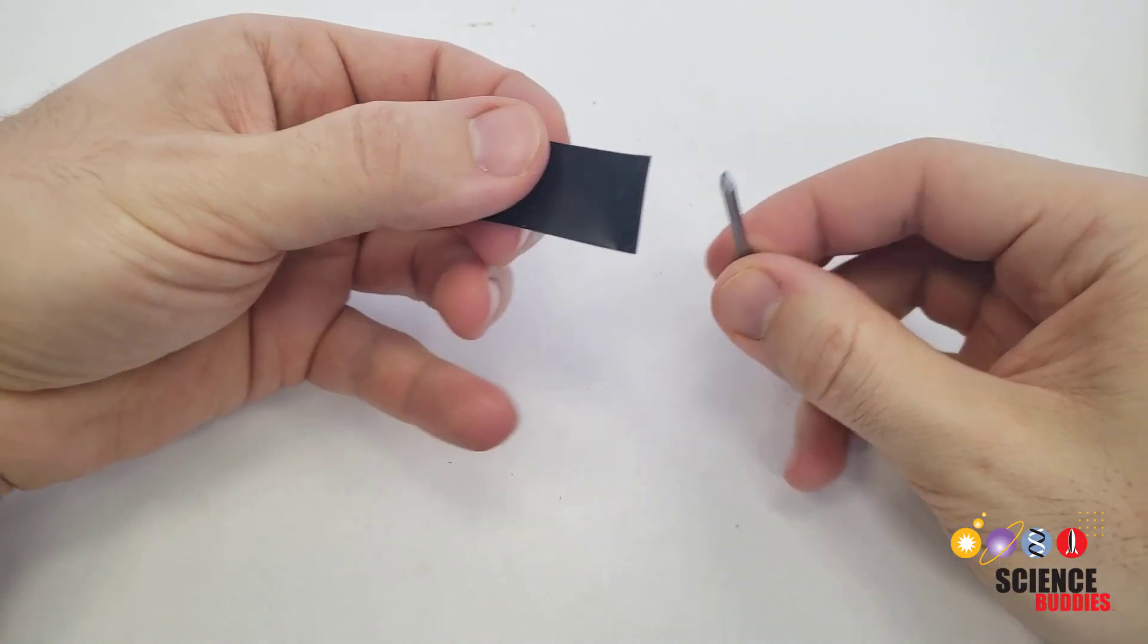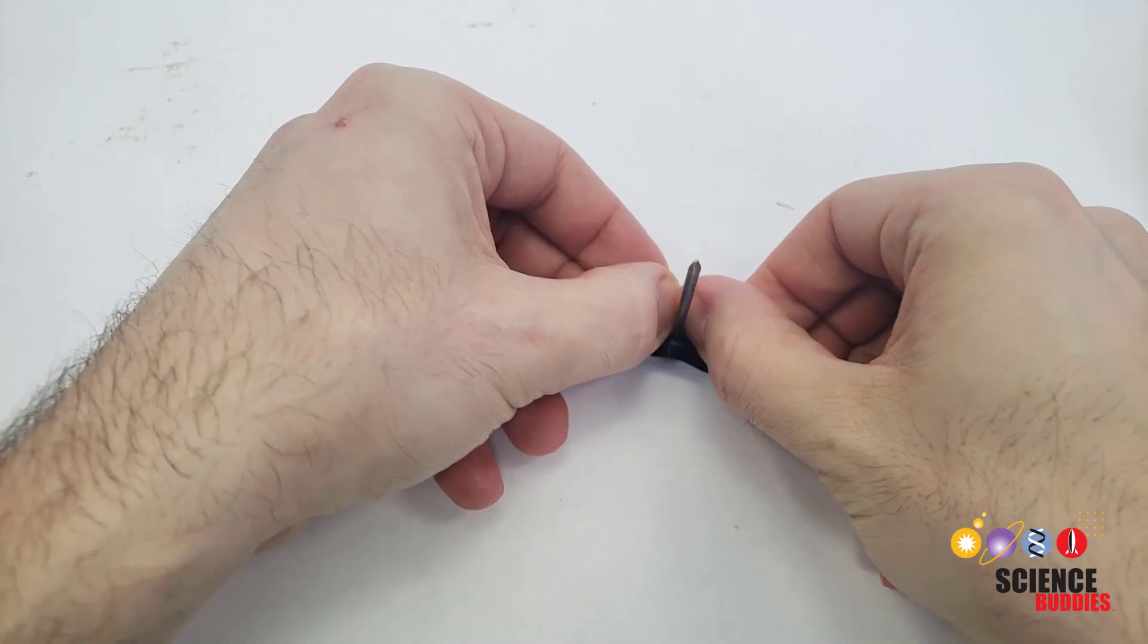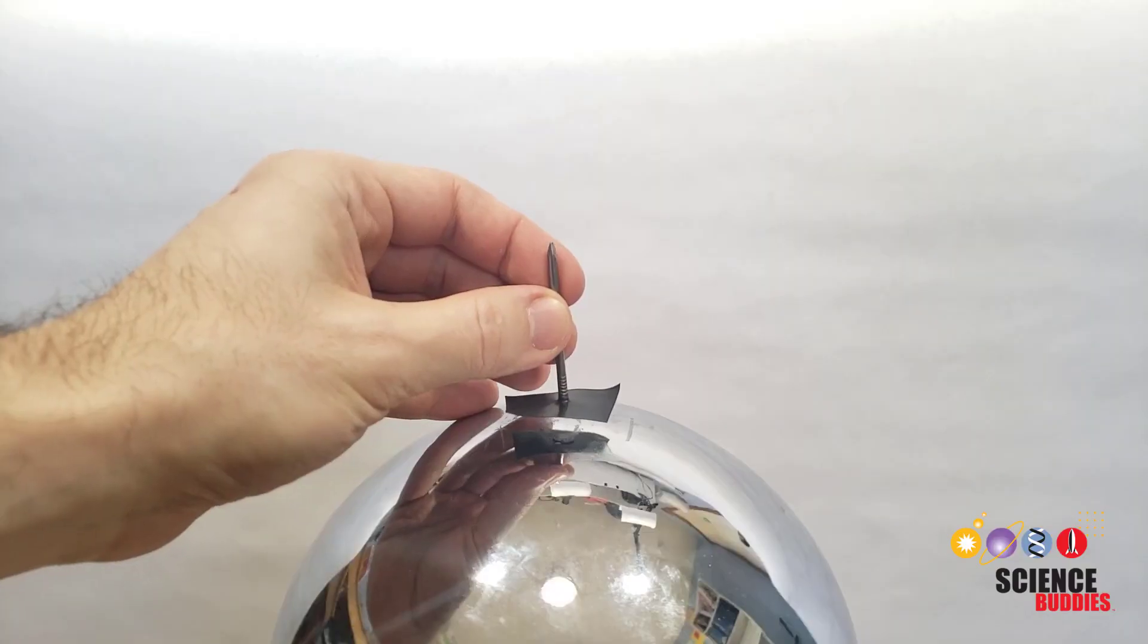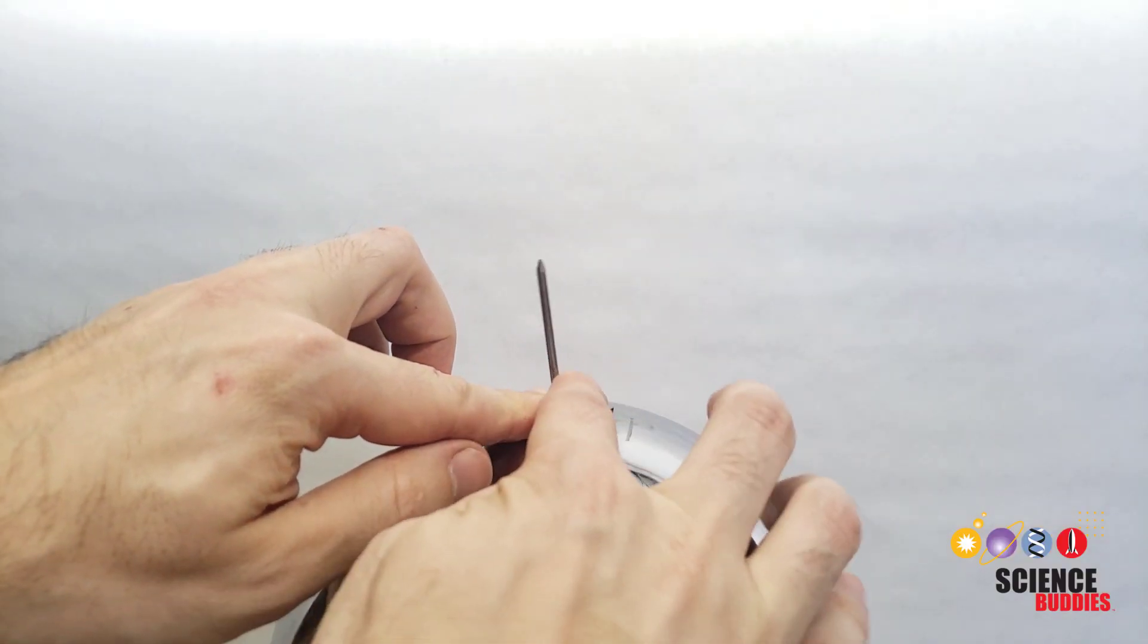Next, take your nail from earlier and press a piece of electrical tape all the way down the shaft with the sticky side facing towards the head. Tape this nail directly to the top of your Van de Graaff generator so it's pointed straight up.